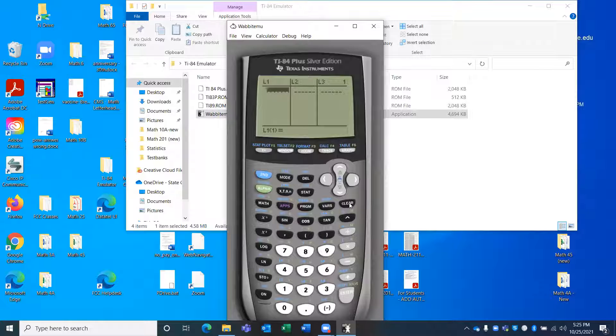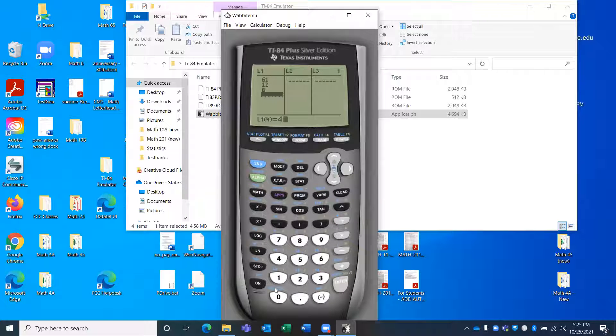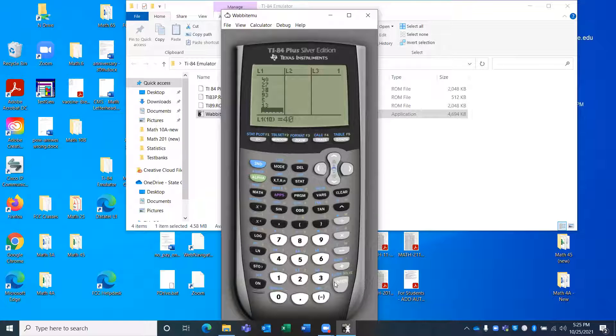So I highlighted L1. I pressed clear, and enter. And then you put the numbers right down L1, like 61, enter, 12, enter. And just keep going. Just put these numbers right down L1, hitting enter each time. 40, 27, 38, 93, 5, 13. Hopefully I didn't miss any. I got them all. Okay.